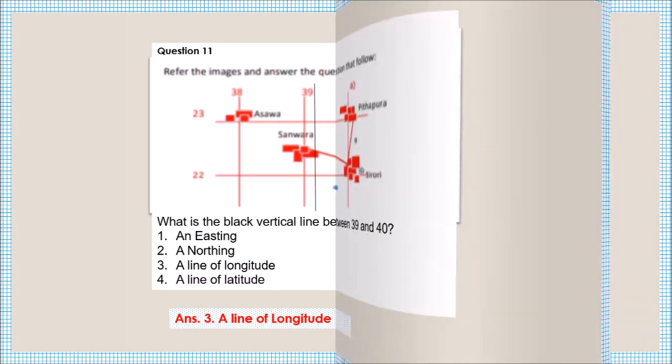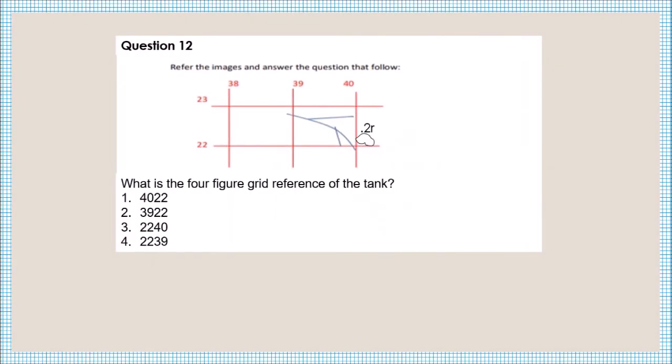Question number twelve: what is the four-figure grid reference of the town? First you take the number of the eastings, then the number of the northings. The answer is 4022.